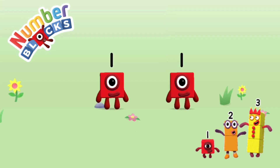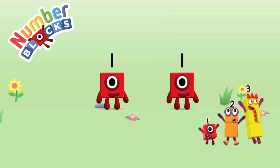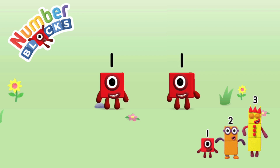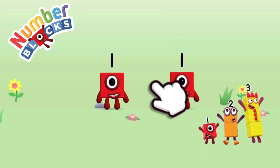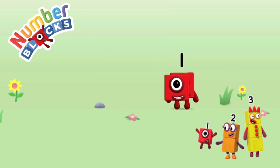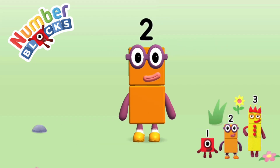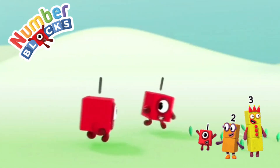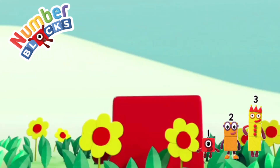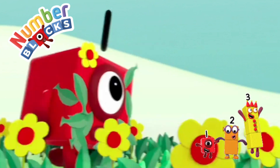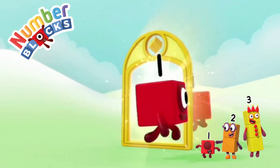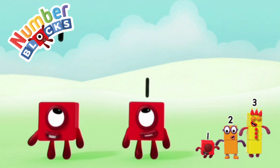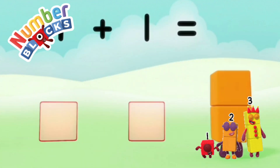You're about to meet number block two. Can you add one? One. And make number block two. Drag number block one. Yay! This is number block two. The magic arrow! Let's do it! One plus one equals two.